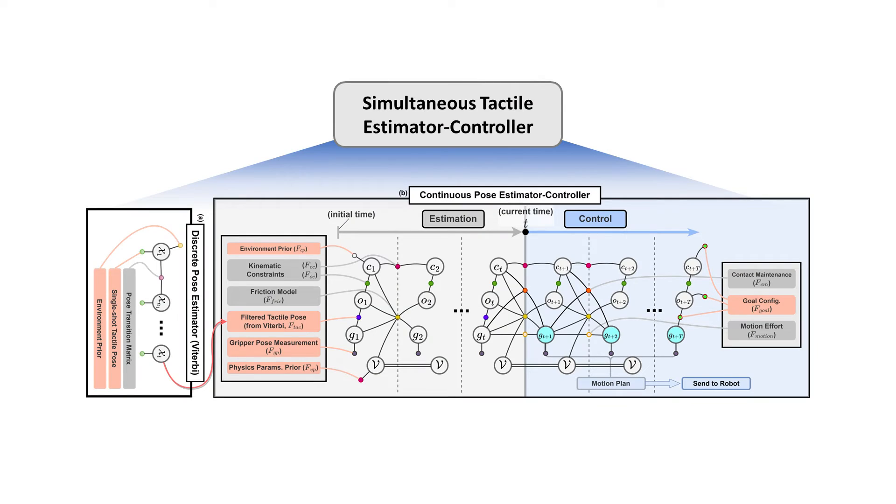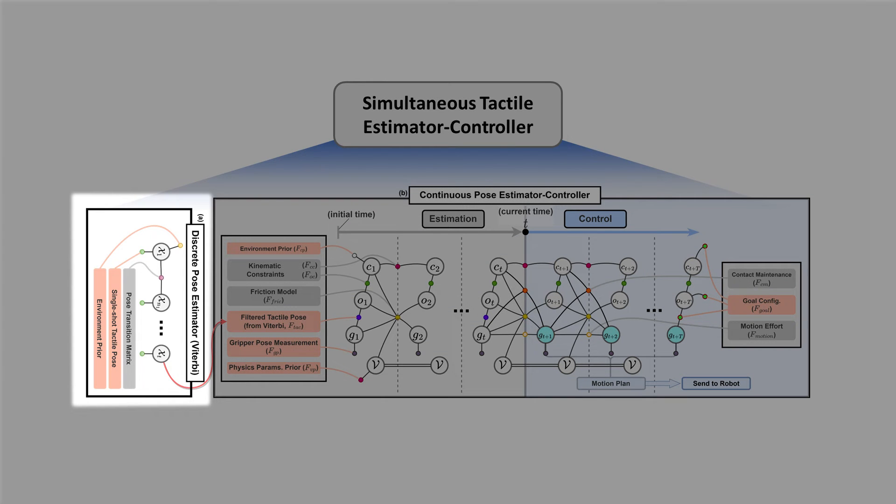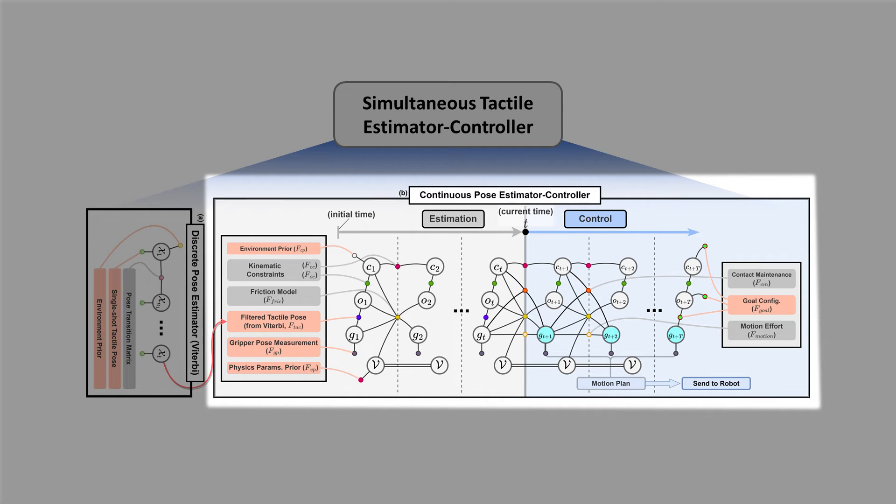The estimator controller consists of two main components. A discrete pose estimator calculates a probability distribution over a discretized grid of relative gripper object poses. The continuous pose estimator controller then consumes this filtered probability distribution and outputs a refined pose estimate as well as the motion plan.